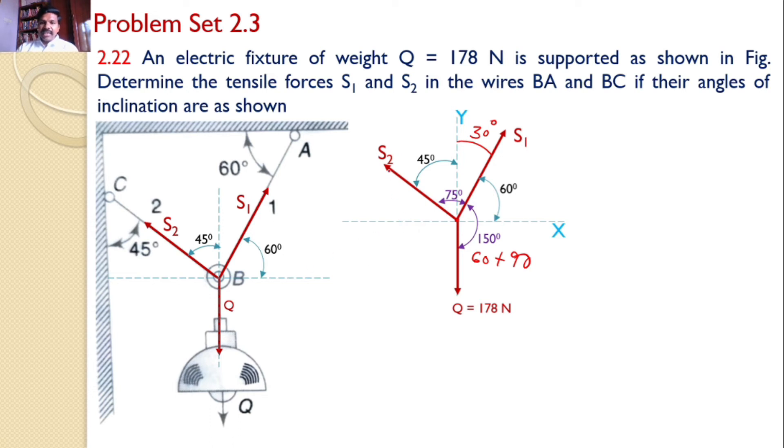If this angle is 60 degrees, then the angle made by S1 with the Y axis is 30 degrees. Hence, the angle between S1 and S2 becomes 75 degrees. Similarly, the S2 makes an angle 45 degrees with the Y axis. Hence, S2 makes another 45 degrees with the X axis. The angle between S2 and the vertical becomes 45 plus 90, that is equal to 135 degrees.